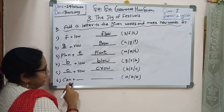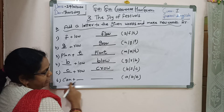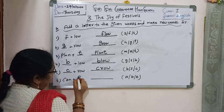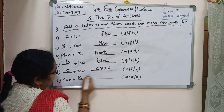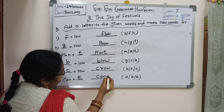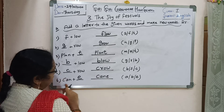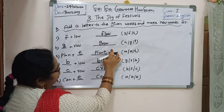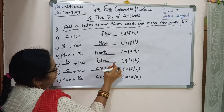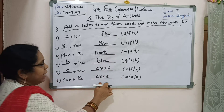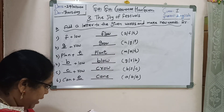Next: C-A-N. We add the letter E at the end. Can — walking stick — C-A-N-E. Flow, grow, plant, blow, crow, can — okay?